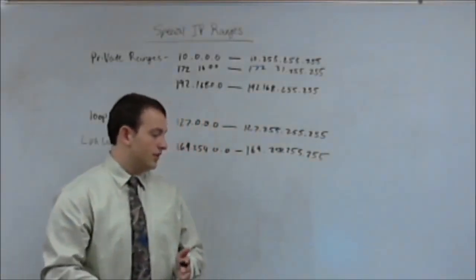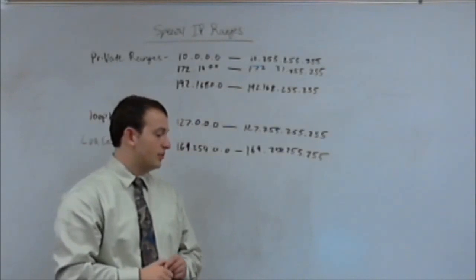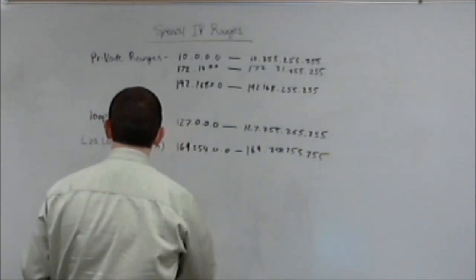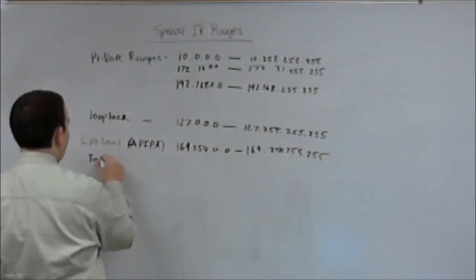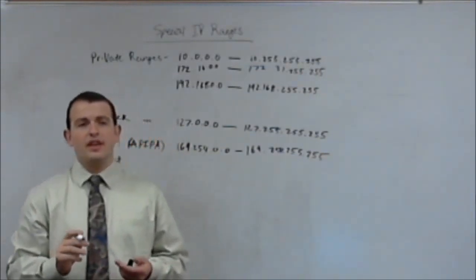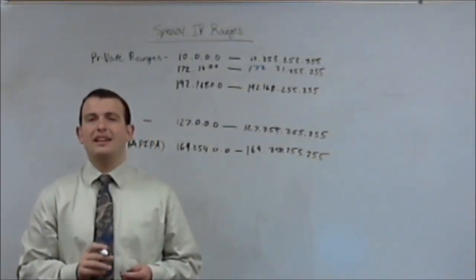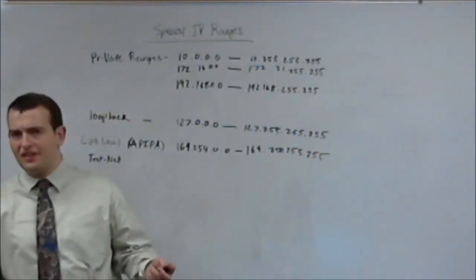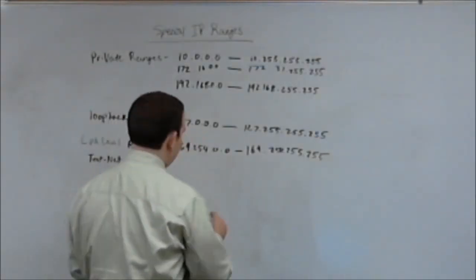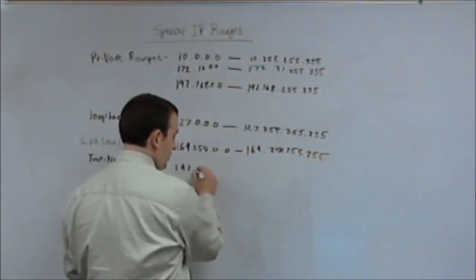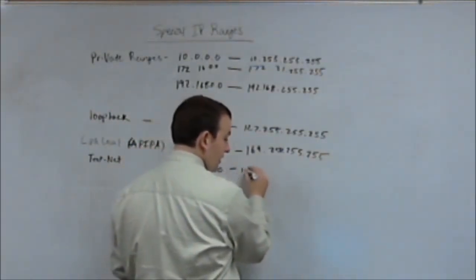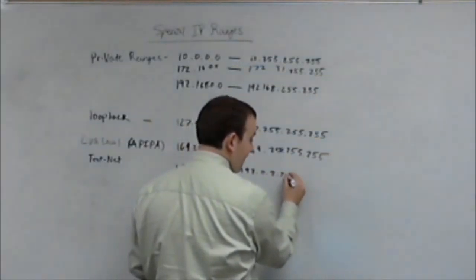Alright, so the next set of reserved addresses we need to know are your test net addresses. Test net addresses are addresses that are actually assignable, but they are reserved for testing networks. They are basically an experimentation range used for classroom environments and such. So the test net range is 192.0.2.0 all the way up to 192.0.2.255.